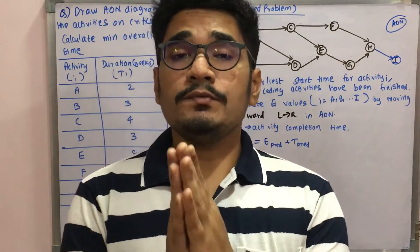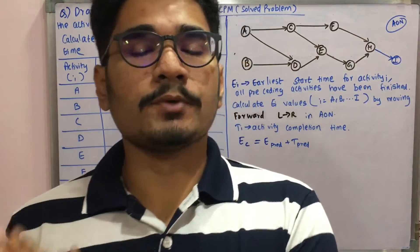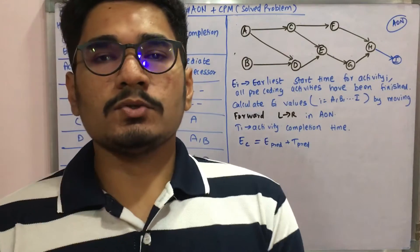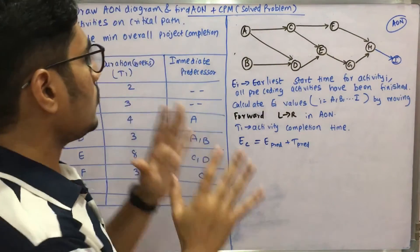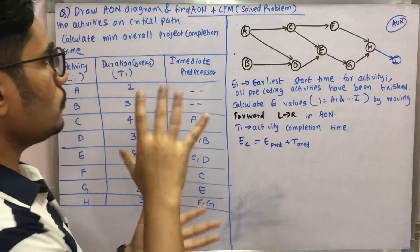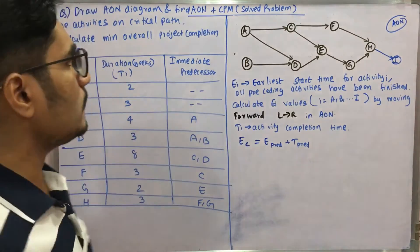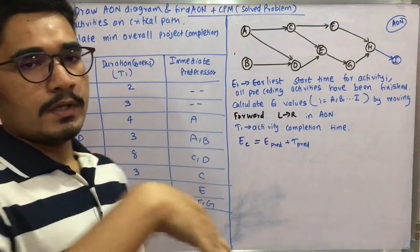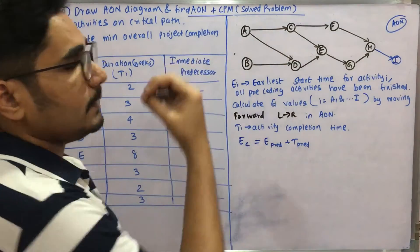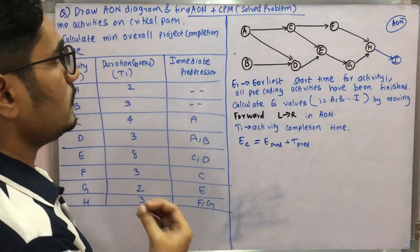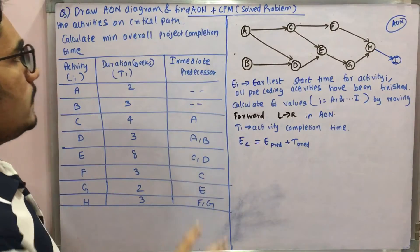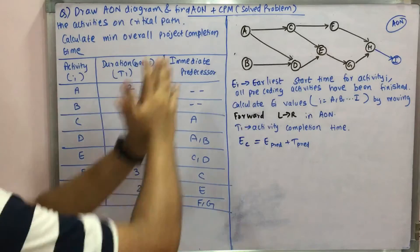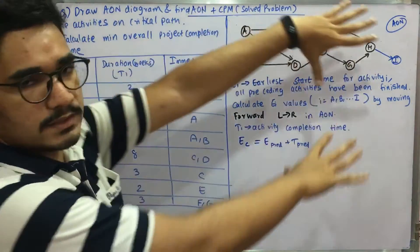Welcome back to my channel. Today this video will be solving a problem based on the subject called software project management. In this, you have a problem based on two diagrams. The first one is AON and with that we will solve the CPM, that is the Critical Path Method. Let's begin — the problem is very easy.